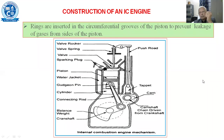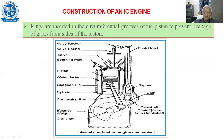The piston will have rings. Normally we'll be having three rings — two compression rings and one oil ring. These are called piston rings. The connecting rod has a small end, where we connect the connecting rod to the piston, and opposite to that is the big end of the connecting rod. This big end is connected to the crankshaft at a particular place called the crank.